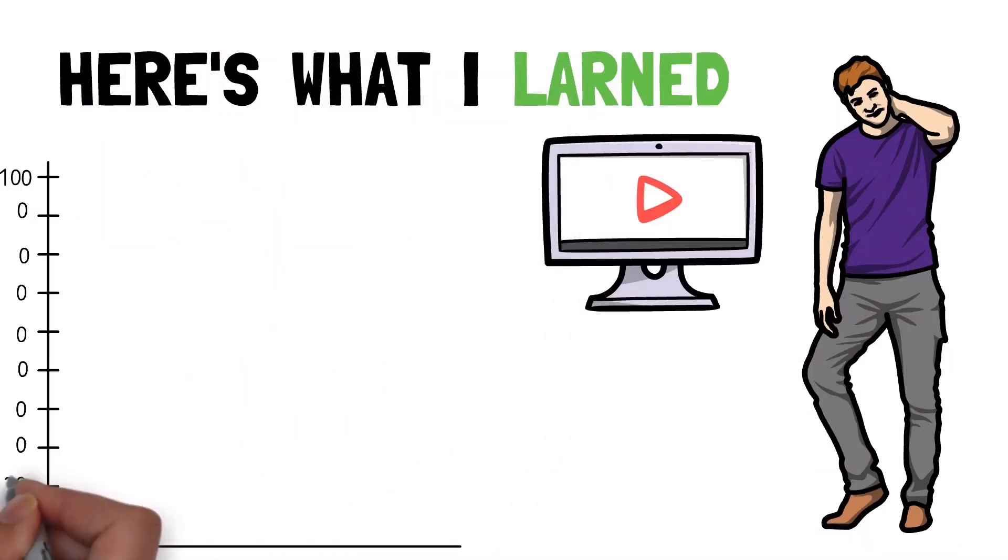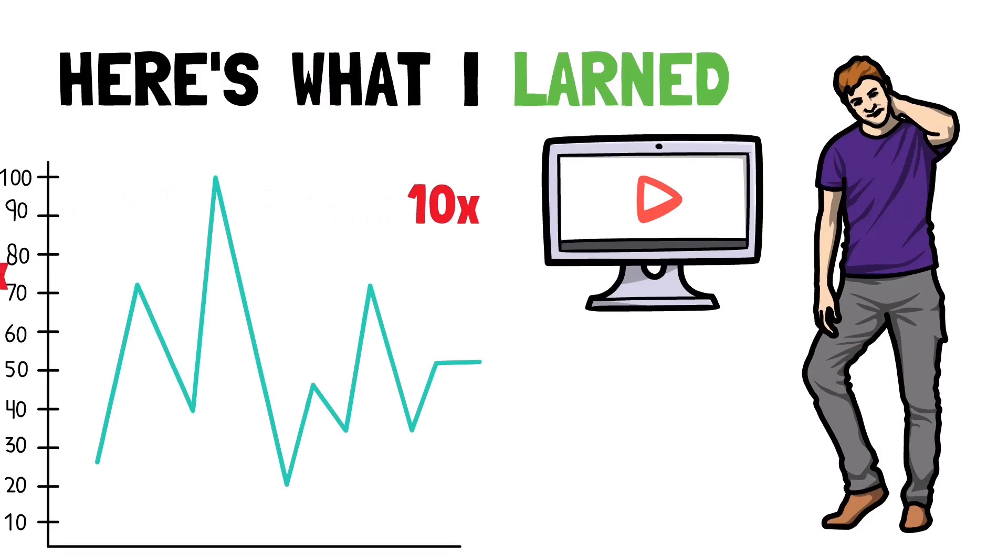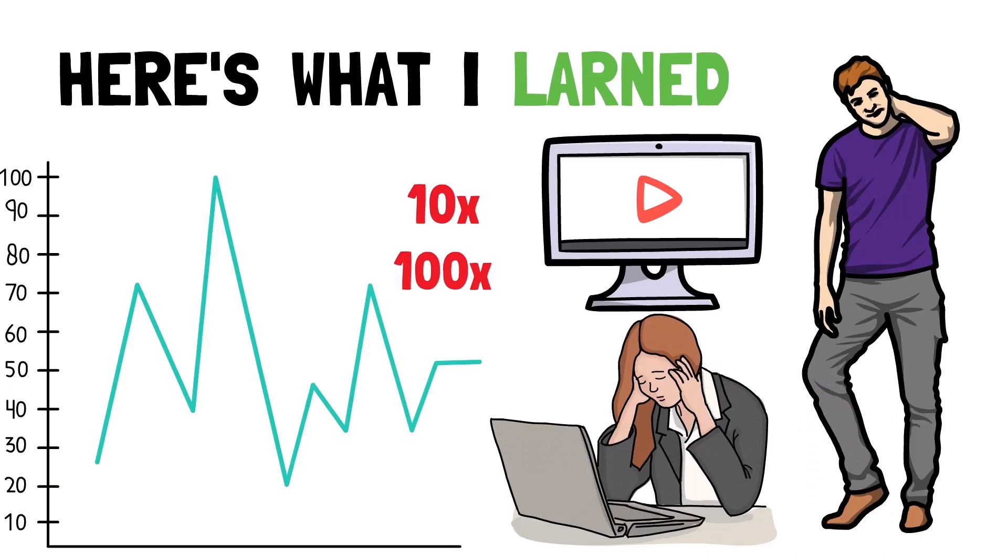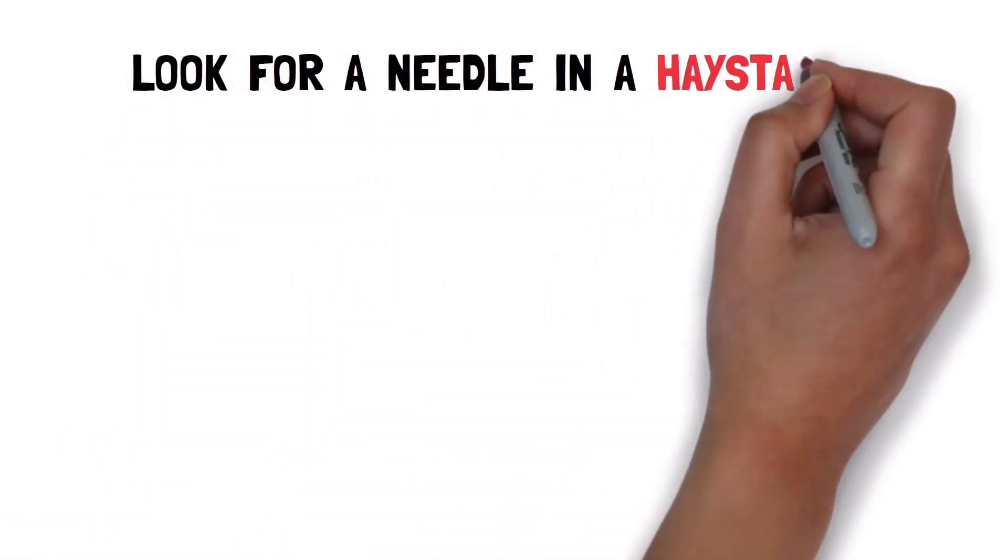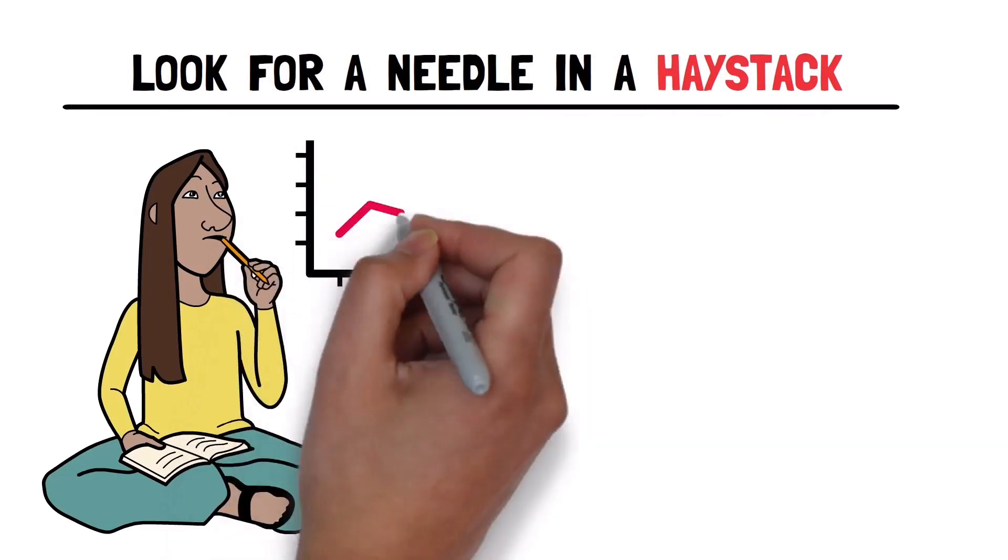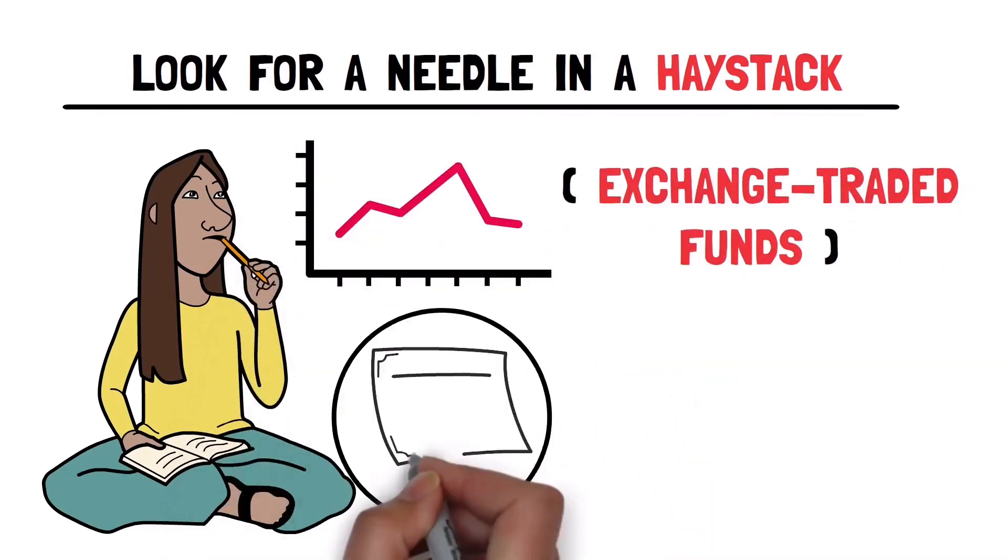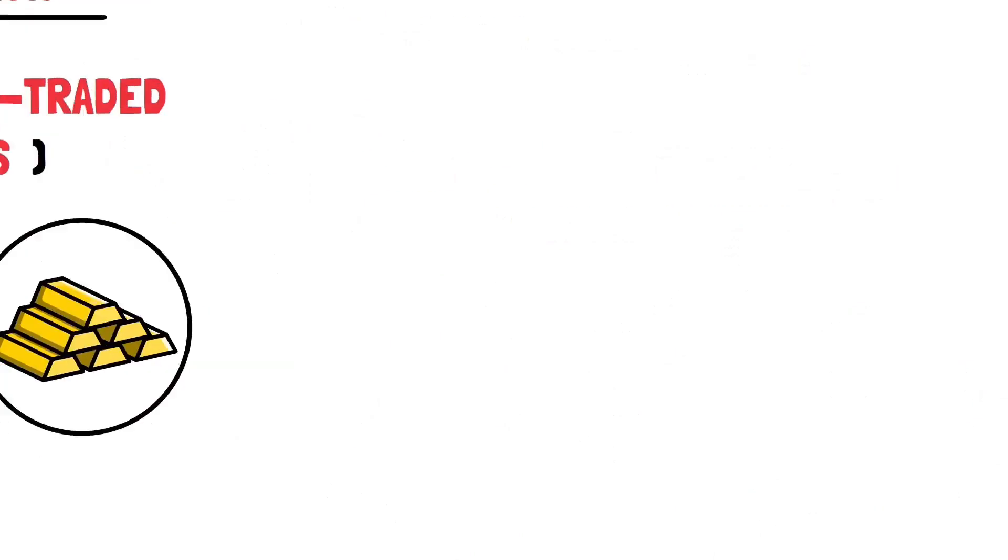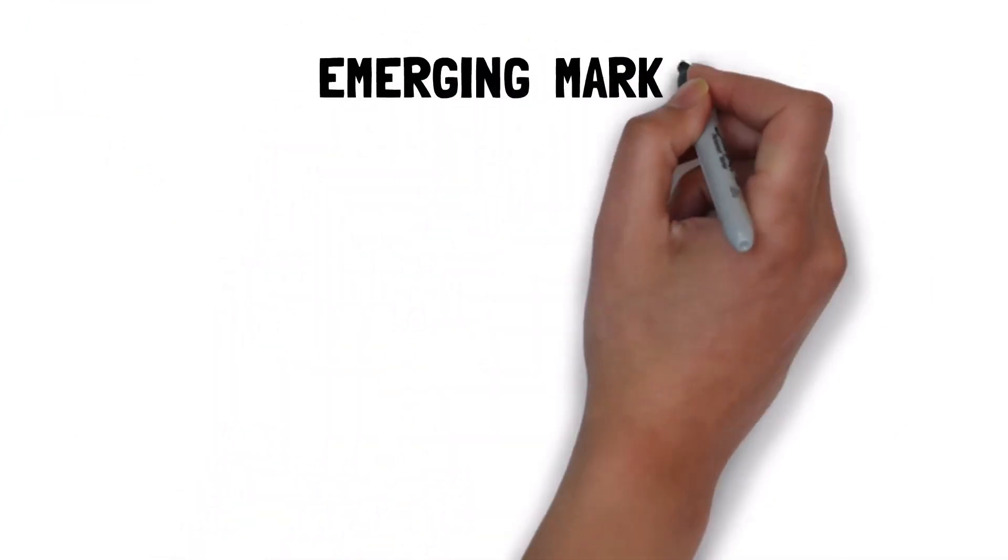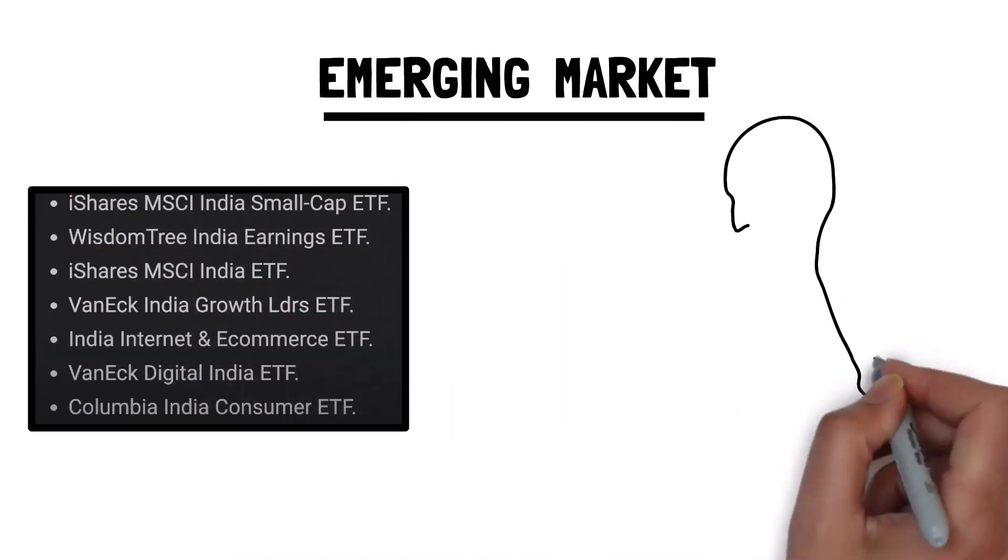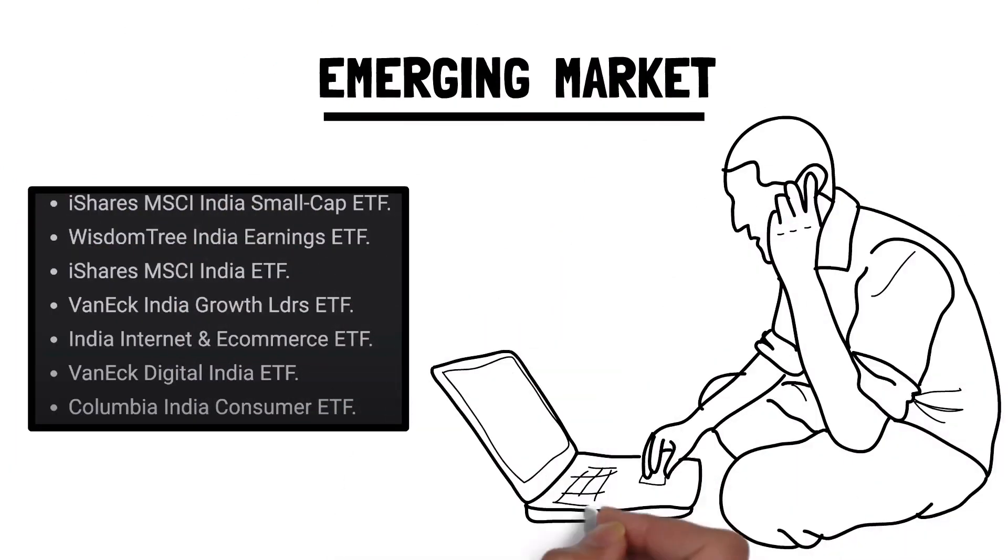Some stocks in India are going to 10 times, some of them will 100 times, but finding that one stock is almost impossible. So rather than trying to look for a needle in a haystack, it might be better to consider what are called ETFs, exchange-traded funds, which are bundles of stocks that look for a certain set of criteria. For example, the emerging market. And here are just some of the more popular ETF options people like to invest in to get exposure to India's stock market.